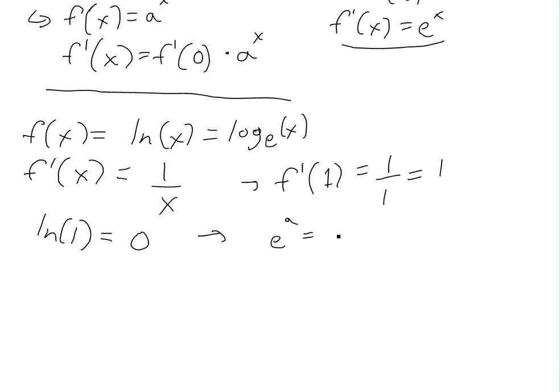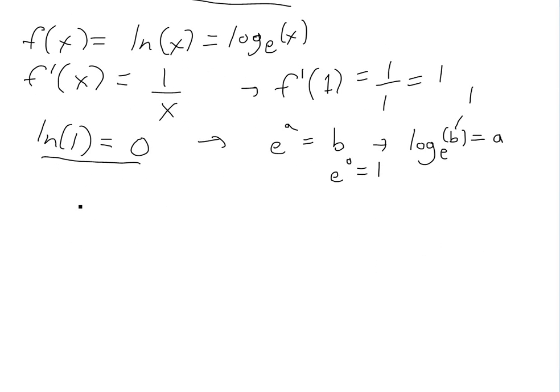So basically if you have e to the a equals b, this is basically how logs are. So this would just be log base e of b equals a. And if this is 1, then the only way it's 1 is if this is 0. So the only way is e to the 0 equals 1. So this one is true. So now we have that.